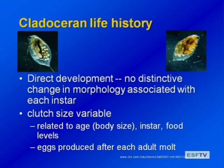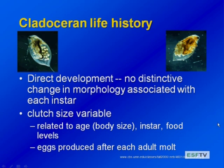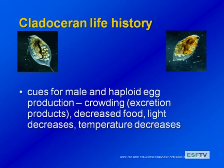Cladocera have direct development — the offspring that hatch look just like the adults, with no distinctive metamorphosis. The clutch size can be really variable. They carry eggs in the brood sack until they develop, and you can see the eye spots of the offspring; they're released live generally. That clutch size is related to the age of the female — the bigger the female, the more eggs can be held and the more offspring are produced. That's related to how many molts they've gone through, and they produce more offspring when there's more food available.